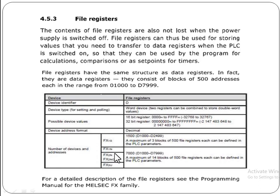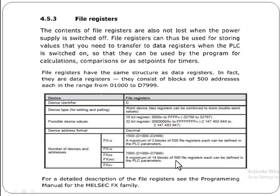Similarly, in FX1N, FX2N, FX2NC, and FX3U, there are 7000 file registers starting from D1000 to D7999, a maximum of 14 blocks of 500 file registers. This 7000 file registers have 14 blocks of 500, each of which can be defined in the PLC parameters.